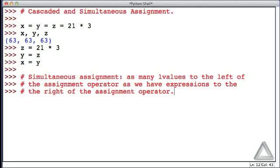The L values are separated by commas, and the expressions are separated by commas. And we only have one assignment operator, one equal sign in the entire statement. Now remember, when I say L values, I'm just talking about an identifier or a variable name.